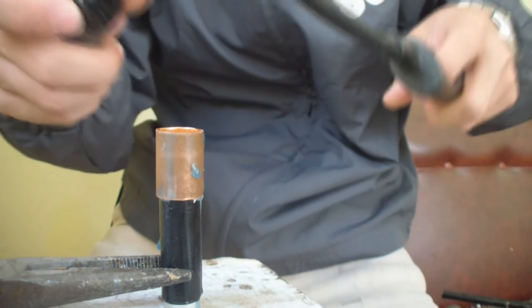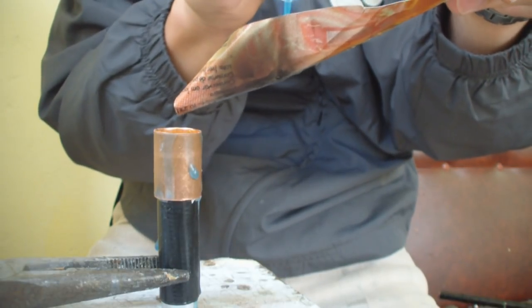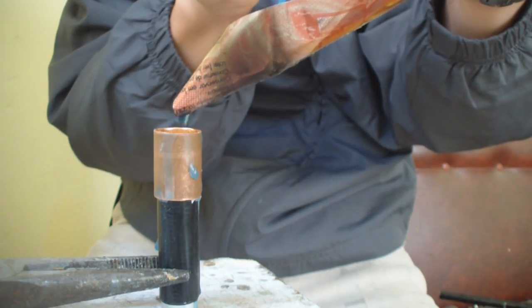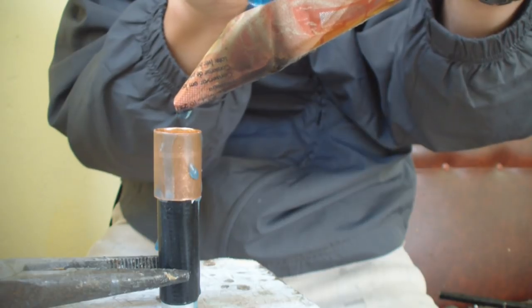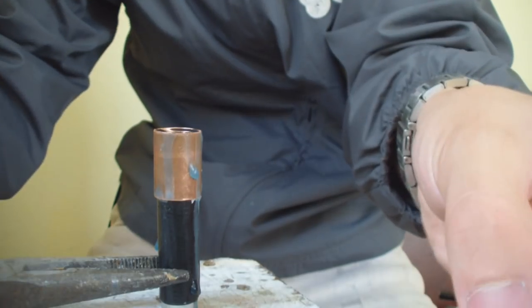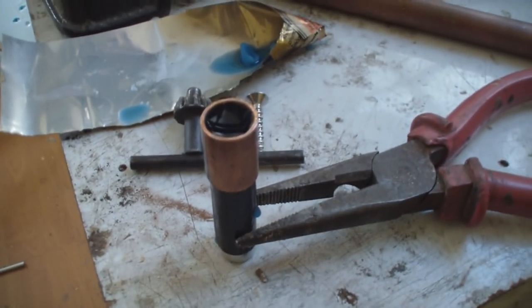When it's prepared, just start to heat up wax and start to put it inside. Don't need to put a lot, just as much as you need. Now let it cool down a little.